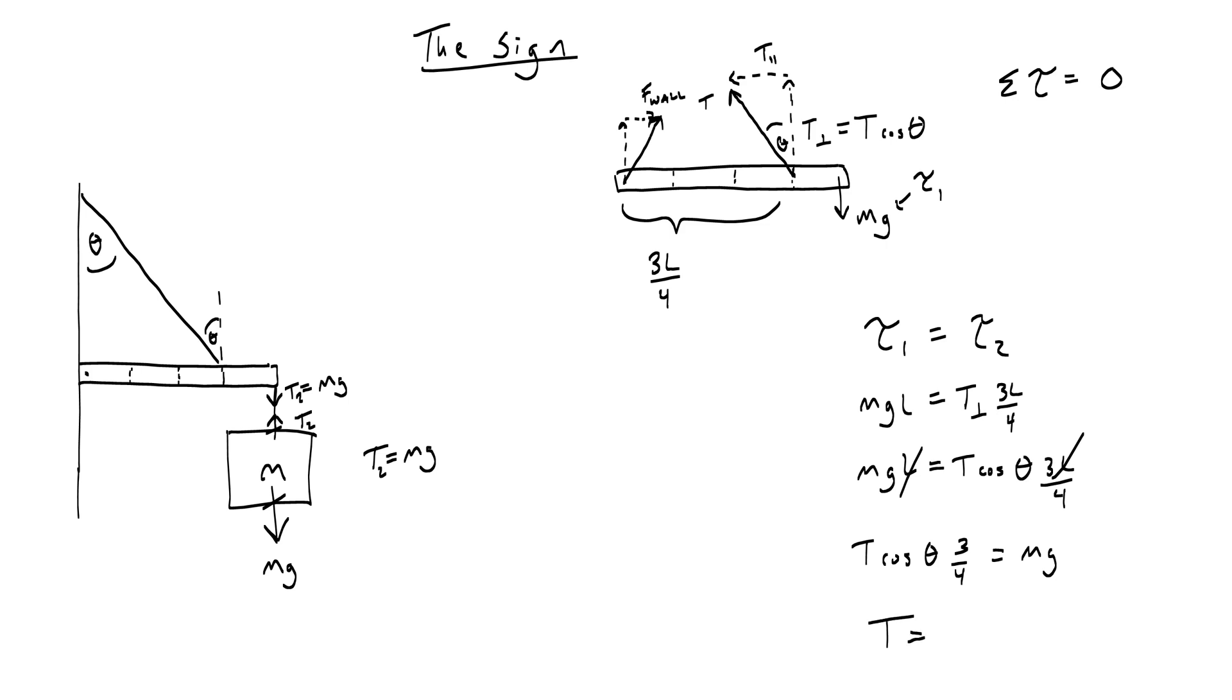If I want to find the tension, I just need to divide both sides, so I'll flip this, I'll get 4 mg over 3, and then the cosine goes in the bottom, cosine theta, and that is the tension.